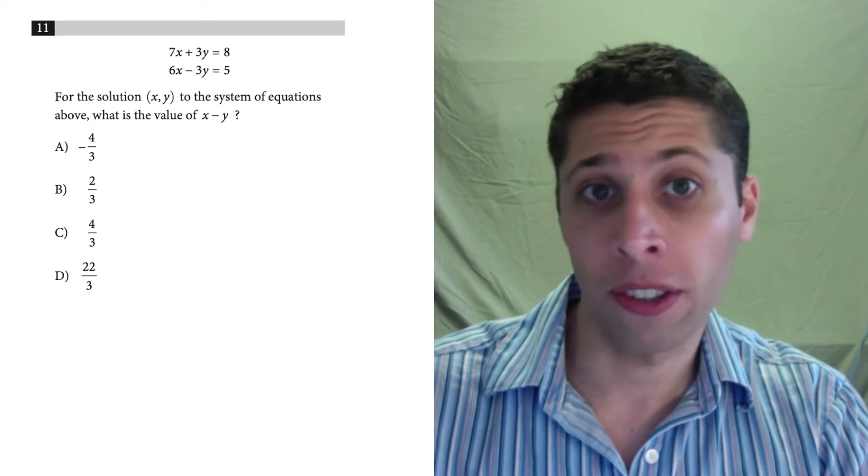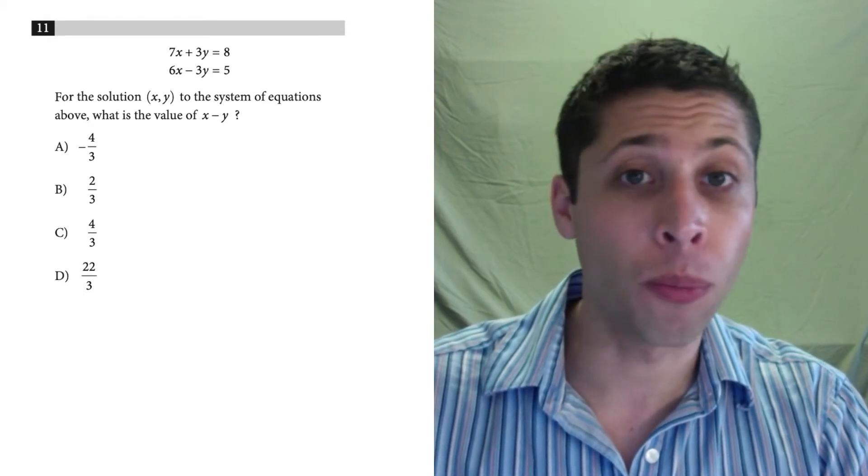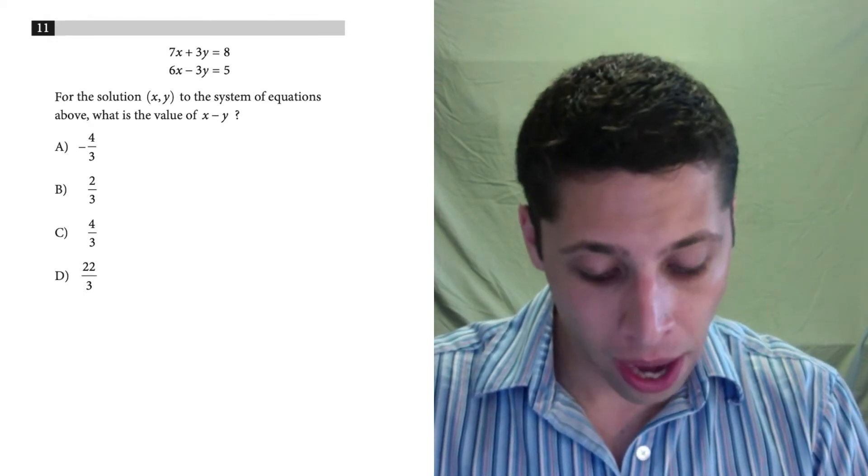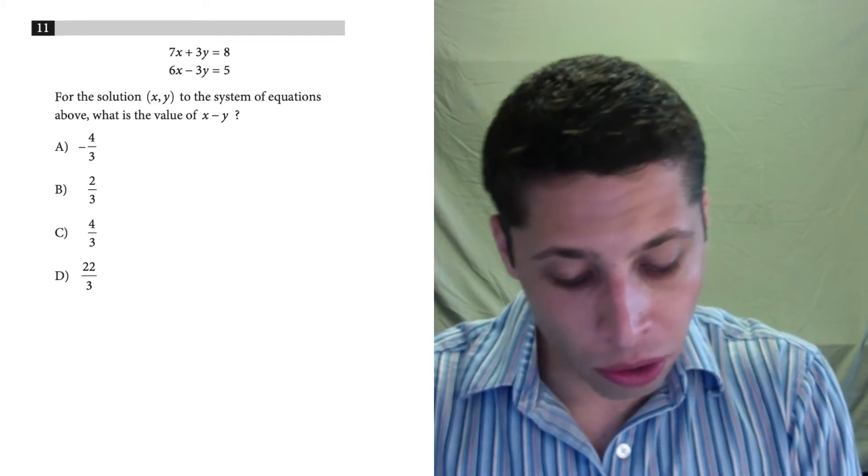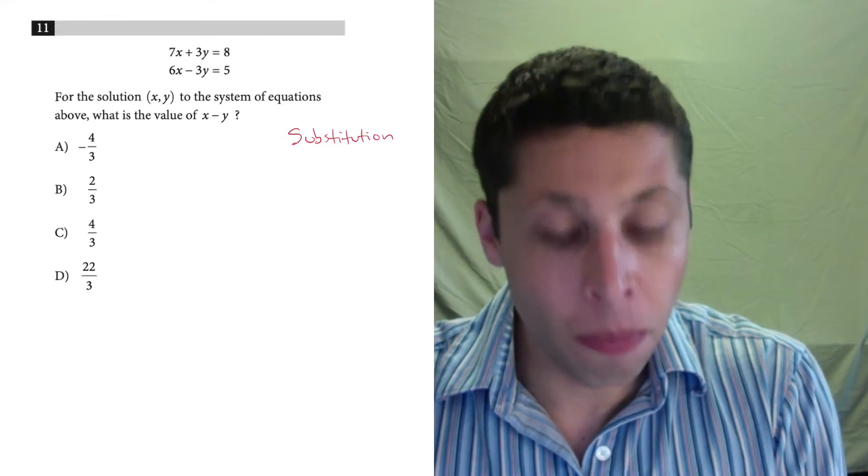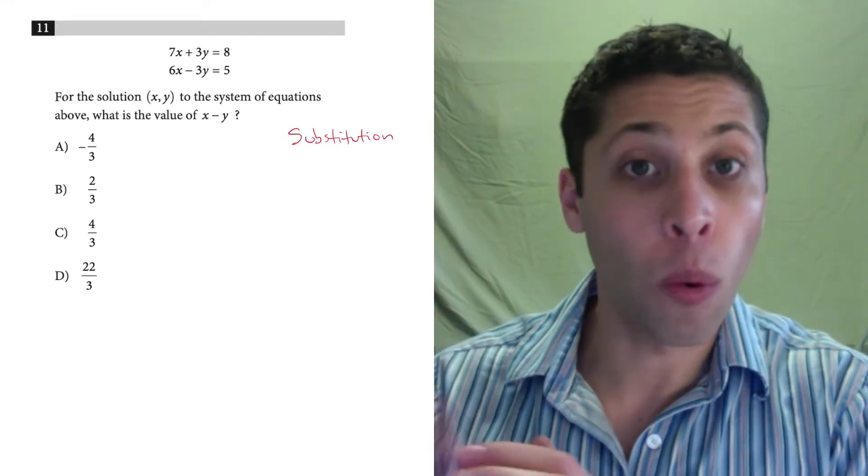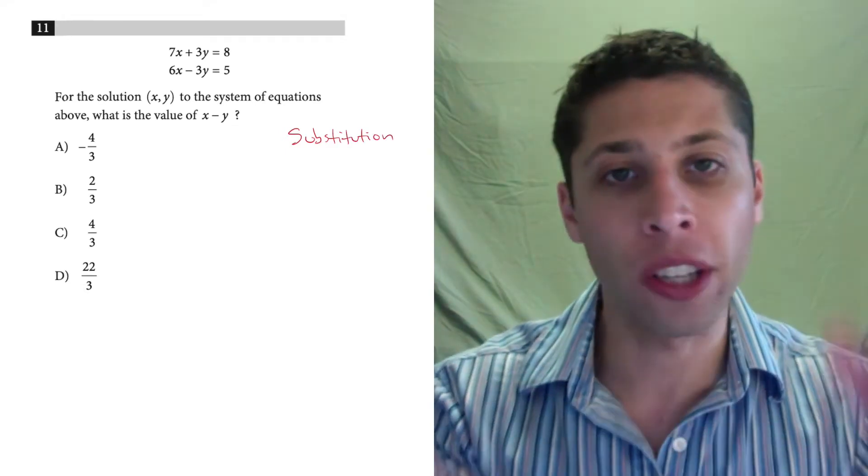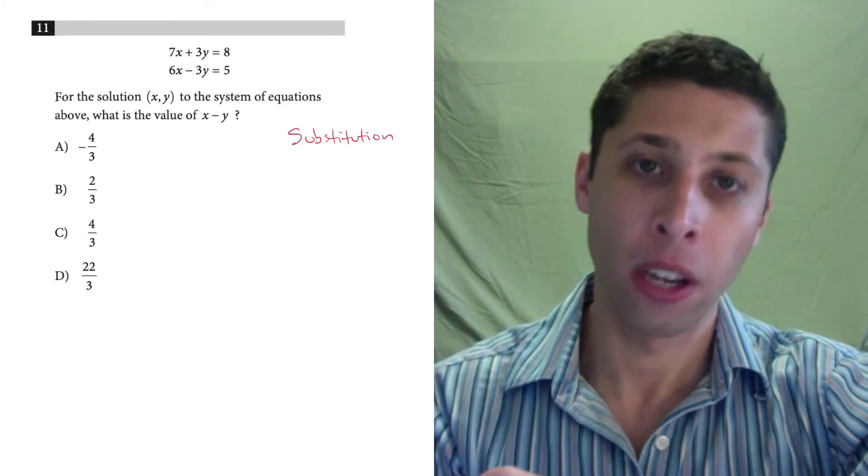Point of intersection questions are going to be solved basically in one of three ways. We're either going to use substitution, which is where you manipulate an equation so that it's like y equals, x equals, and then you substitute that equation in with the other one.